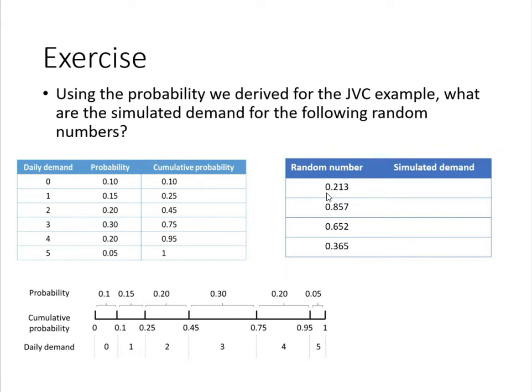The first random number, 0.213, if you look at this figure, it falls in this bucket because 0.213 is between these two numbers, so the simulated demand is simply 1. If you look at this table, this number is in between these two numbers, and that leads to the simulated demand of 1.